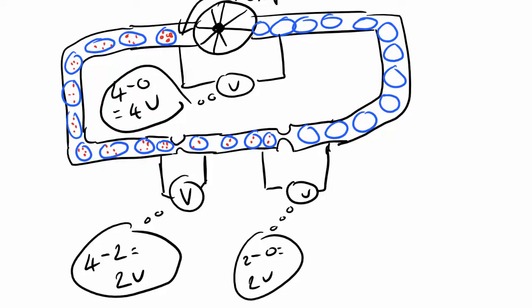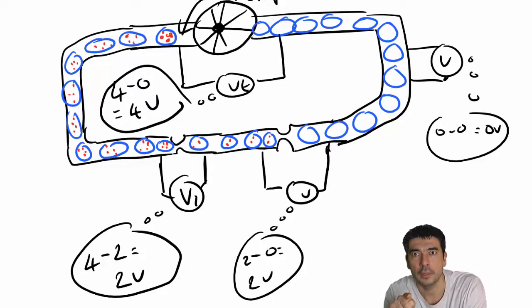A voltmeter placed anywhere else, as long as it's not across a component here, it would be 0 joules of energy minus 0 joules of energy, which would be 0 joules of energy again, or 0 joules of potential energy difference per coulomb of charge across what I'm checking.